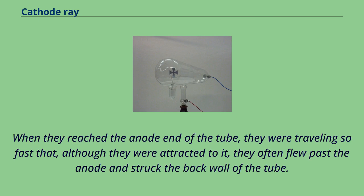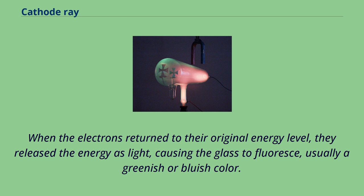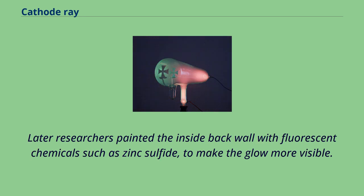When they reached the anode end of the tube, they were traveling so fast that, although they were attracted to it, they often flew past the anode and struck the back wall of the tube. When they struck atoms in the glass wall, they excited their orbital electrons to higher energy levels. When the electrons returned to their original energy level, they released the energy as light, causing the glass to fluoresce, usually a greenish or bluish color. Later researchers painted the inside back wall with fluorescent chemicals such as zinc sulfide, to make the glow more visible.